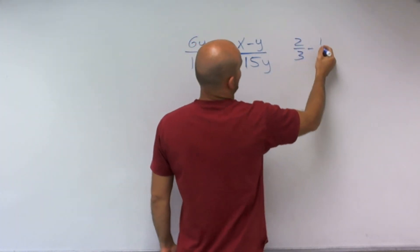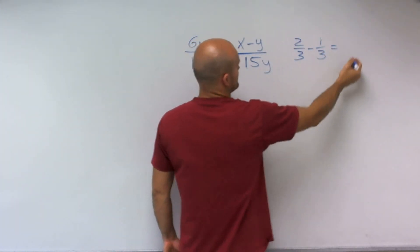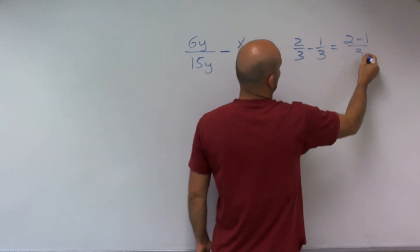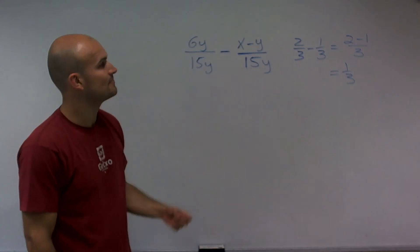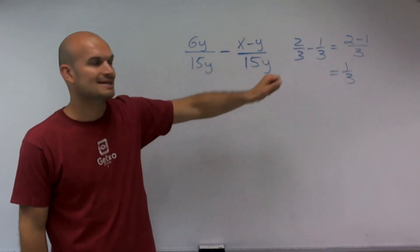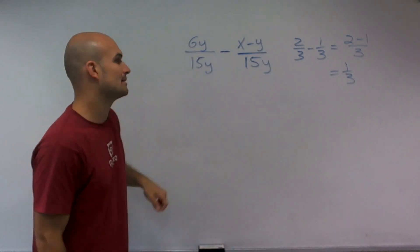2 thirds minus 1 third equals 2 minus 1 over 3, which equals 1 third. All right? So that's just your little side example. So that's exactly what I'm going to do here.